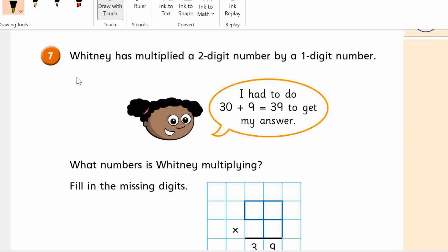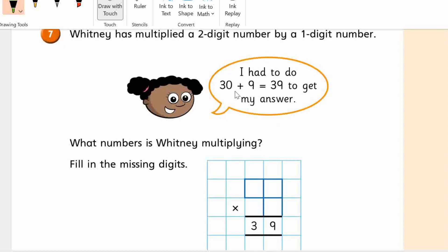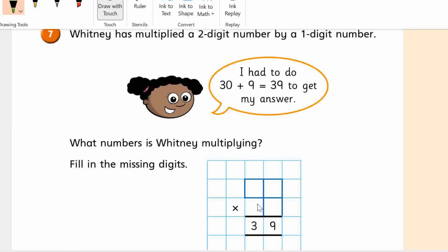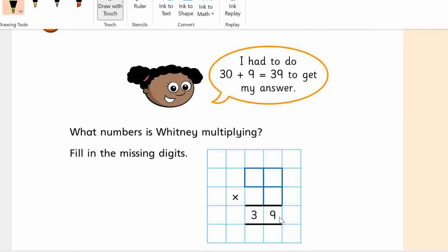Anyway, we're on number 7. Whitney has multiplied a two-digit number by a one-digit number. I had to do 30 plus 9 equals 39 to get my answer. What numbers is Whitney multiplying? Fill in the missing digits. Okay. So there's two missing digits. And she's got 39 is her answer. Right?